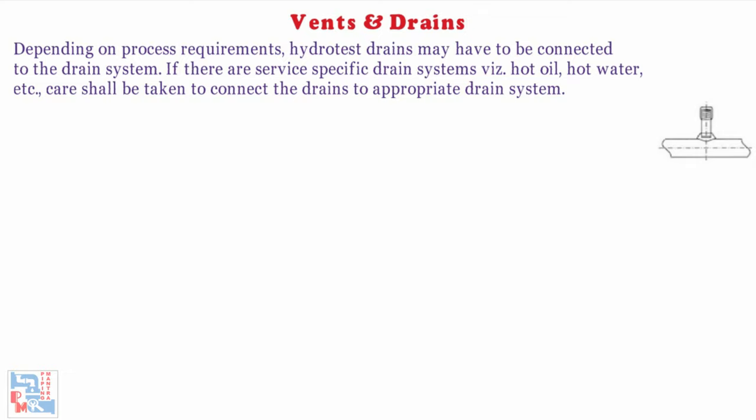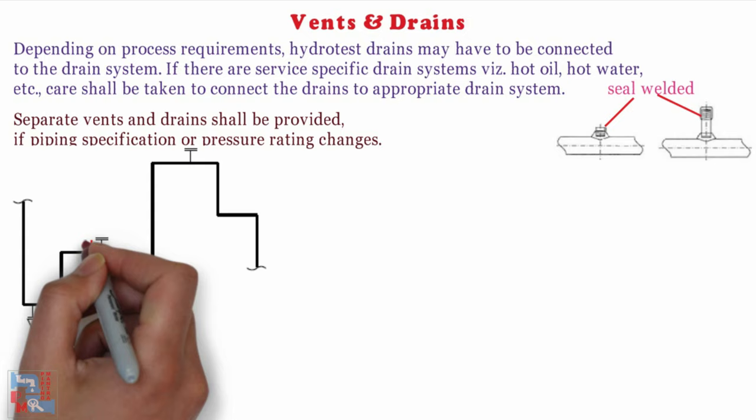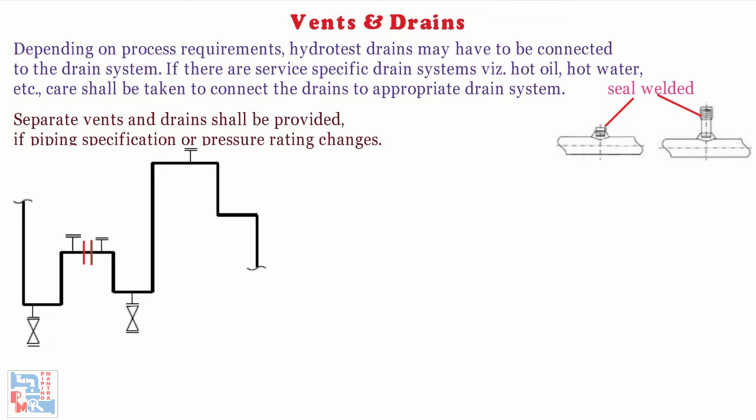Hydrostatic vents not provided with valves but with threaded plugs or caps shall be seal-welded after testing. Separate vents and drains shall be provided on a line in a system if piping specifications or pressure rating changes. If there is a pressure break or class break, we have to provide separate vent and drain for hydrotest, since the hydrotest packs will be different for different test pressures.